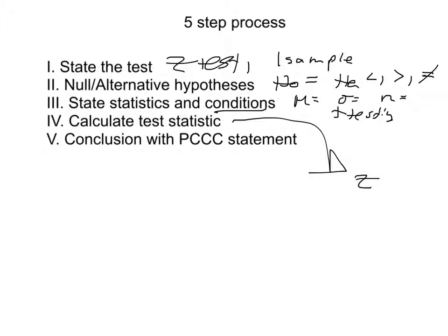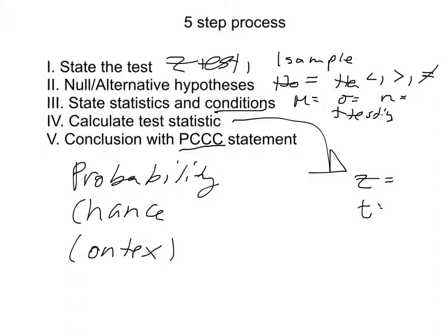And then step four is when you calculate your test statistic. So what is z equal, what is t equal, in this case. And then our conclusion, or our fifth step, is our PCCC statement. So this is probability, chance, context, and conclusion.